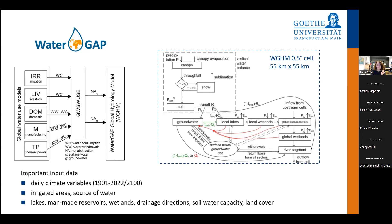This is a complex model with many poorly-constrained parameters. For constraining, there are only two variables that are truly integrated and therefore very good for model calibration. One is stream flow — it integrates all flows and storages upstream and is used by virtually all hydrological models for validation and calibration. And now, with GRACE total water storage anomaly, we have a second integrative variable, because total water storage is the sum of storage in rivers, wetlands, lakes, reservoirs, groundwater, soil, snow, and canopy.